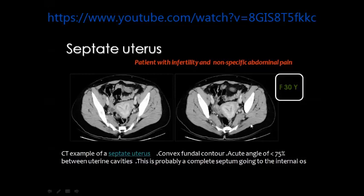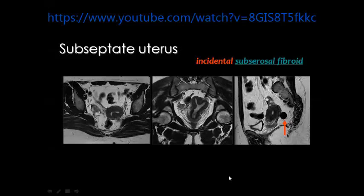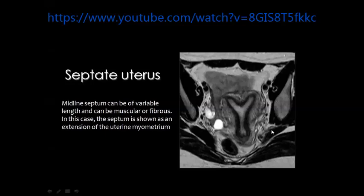CT is the least useful of the imaging modalities to identify uterine anomalies, but sometimes you can see this as an incidental finding while looking for other pathology. Here you see the uterus with two separate endometrial cavities with a septum in between — this is septate uterus on CT. This is subseptate uterus with a septum near the uterine fundus dividing the cavity into two parts with a single cervical canal. Another example shows partial septation with two endometrial cavities and a single cervical canal, with an incidentally found uterine fibroid.